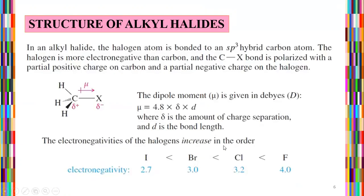Regarding the structure of alkyl halides, the halogen is bonded to an sp3 hybrid carbon atom. The halogen is more electronegative than the carbon, and the carbon-halogen bond is polarized with a partial positive charge on carbon and a partial negative charge on the halogen.